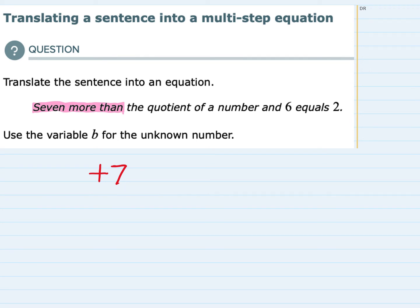Taking the sentence from there: the quotient of a number and 6. So it's 7 more than the quotient of a number, which means it's a fraction. It's the quotient of some number that we don't know and 6. The value we don't know we're supposed to use b for, so the quotient of b and 6.